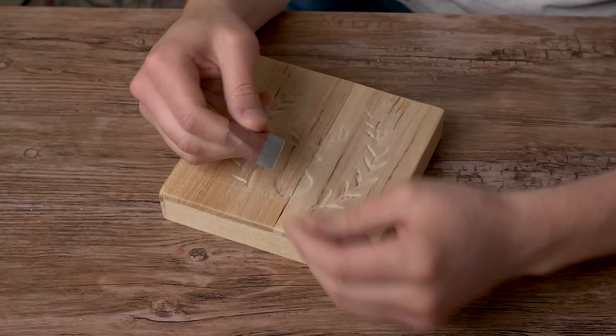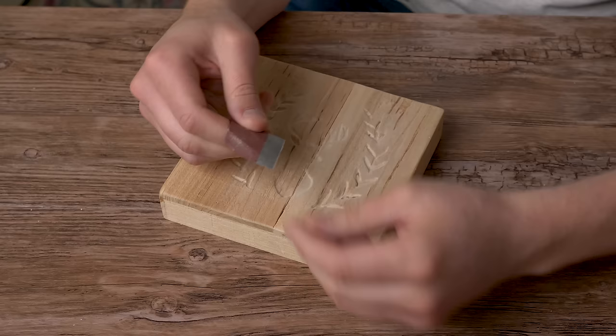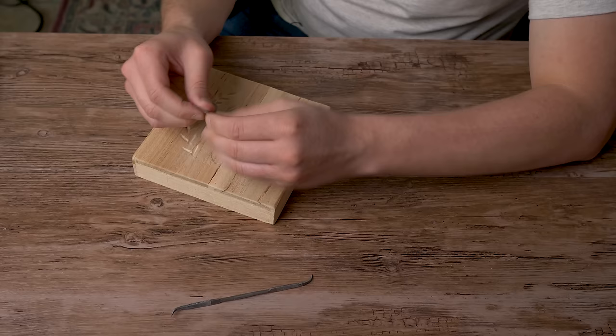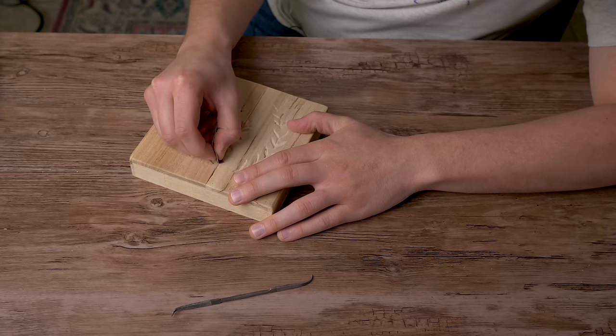Okay, after I got the edges cleaned up with a riffler, I'm going to go to a piece of sandpaper. This right here is about a 120 grit. I'm just going to fold this up right here and start sanding. And this is the magic ingredient.